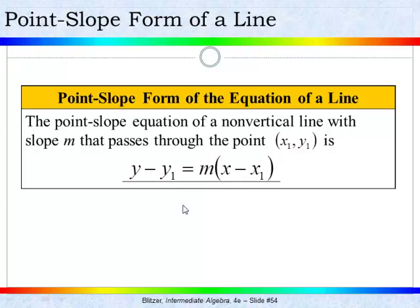Take a moment to notice where each of the variables appear in the formula. Where do you see the slope? Right, it is here on the right-hand side. What about the values of the coordinates of the points? You see y1 on the left and x1 on the right. And they are both being subtracted from the variables x and y.